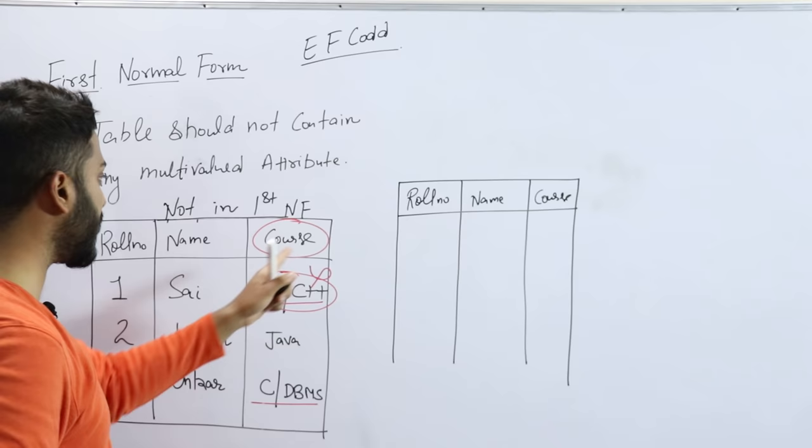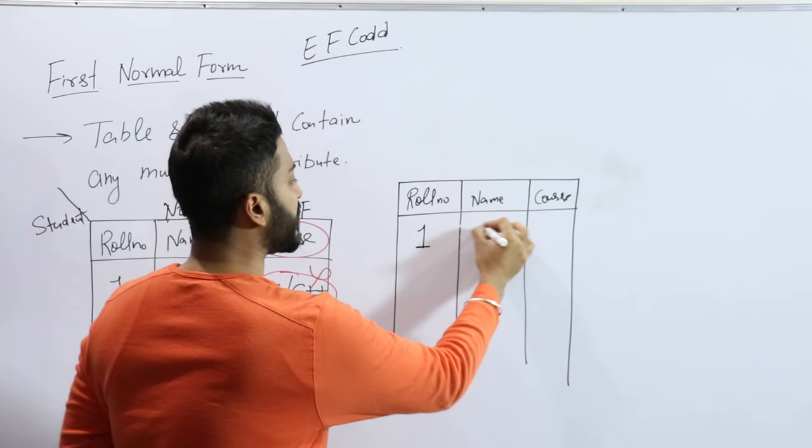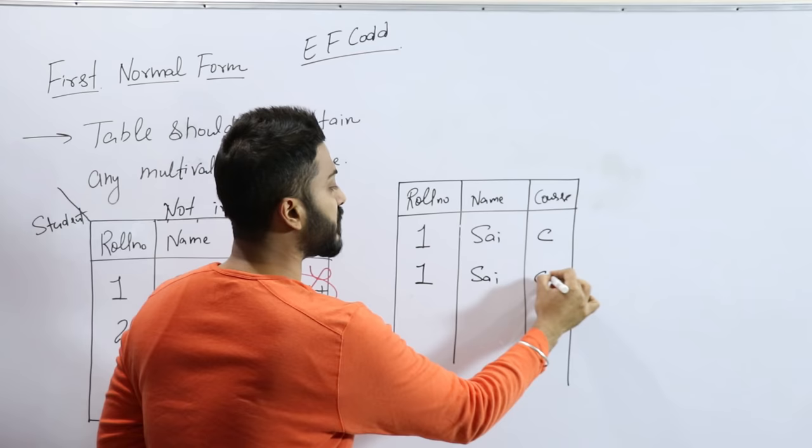But how will we insert the row? One Sine C and one Sine C++. I have converted it into two rows.